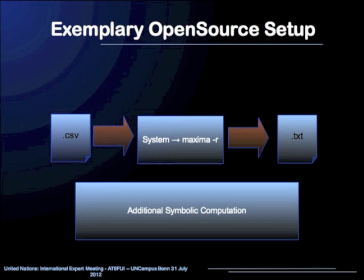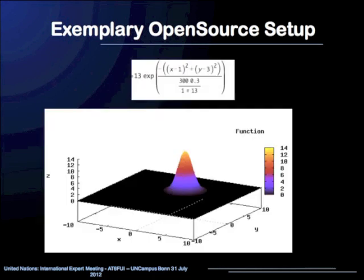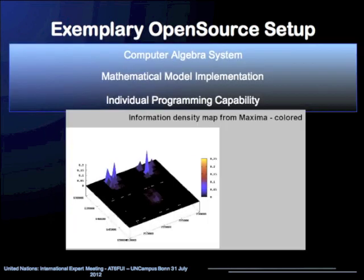On this slide, the further processing is demonstrated. The CSV file with coordinates and influence factors is processed by the CAS Maxima, which is started by a system call. The computed parameters of the interpolation mapping are then stored in a text file for further processing. An example for the used Gaussian mappings is shown: at the coordinates of the regarded codebook vector is the maximum of the graph, and in the according cluster 13 input vectors are located. The whole interpolation mapping as a sum of these Gaussian mappings is also shown.